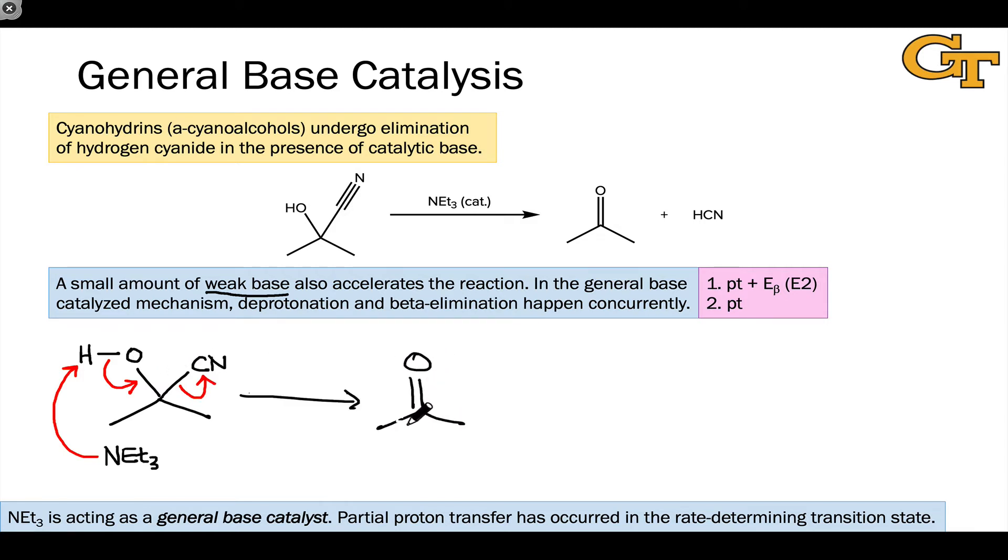This avoids the formation of an oxyanion, an O- intermediate, because we go right to the carbonyl product, the conjugate acid of the base used, and CN-.